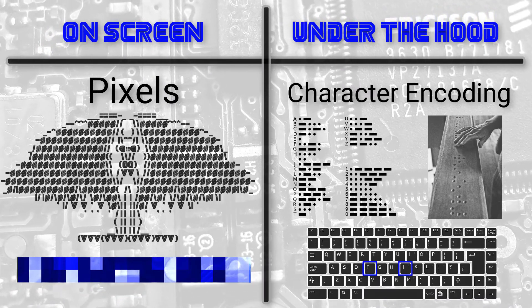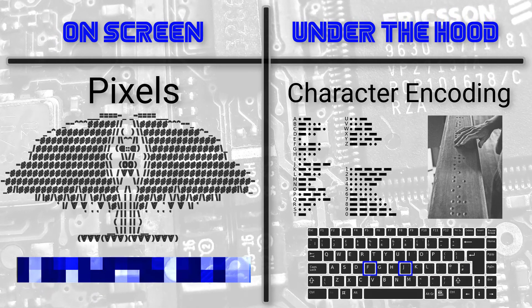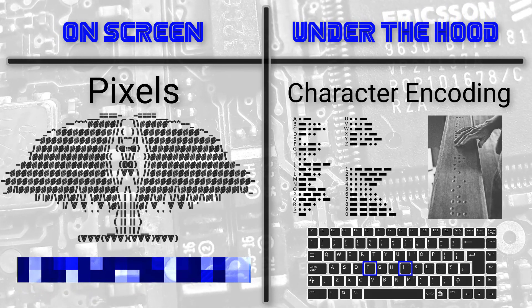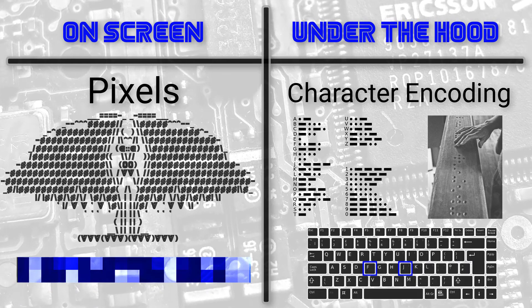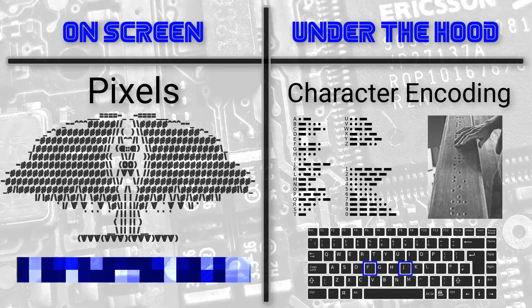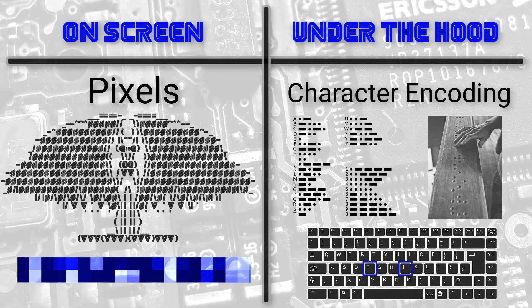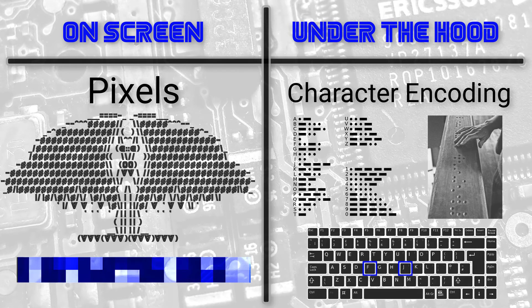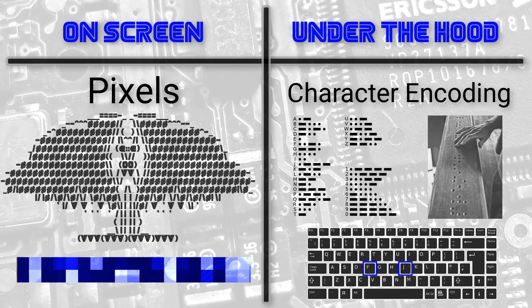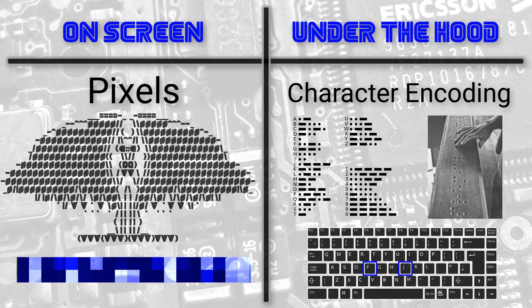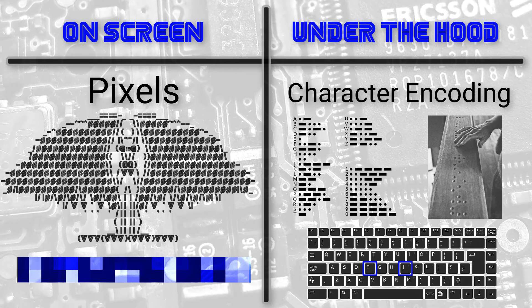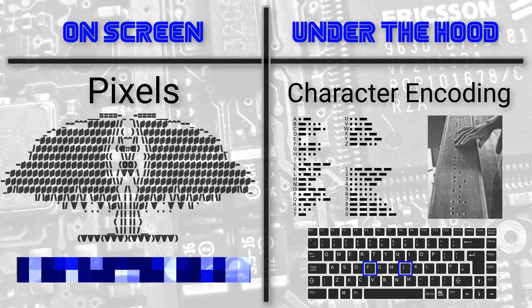Character encoding inside computers allows characters to be represented as numbers, and this is needed because computers only understand numbers. Basically, all the characters you can think of are numbered, and the computer sees these numbers. We list out the characters and give each character its own number — this is what the computer sees. All of this happens under the hood, so we don't have to deal with these numbers directly very often.